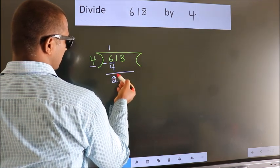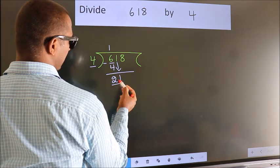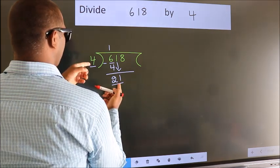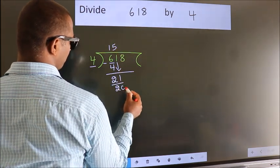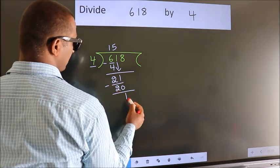After this, bring down the beside number. So 1 down. So 21. A number close to 21 in 4 table is 4 5s 20. Now we subtract. We get 1.